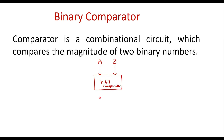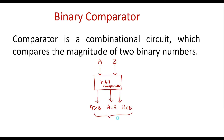When we compare these two numbers, it may produce three outputs. One output may be a is greater than b, in some cases a may be equal to b, and there is another output where a may be less than b. Thus in a comparator, we have two inputs and three outputs, where a and b are the inputs.